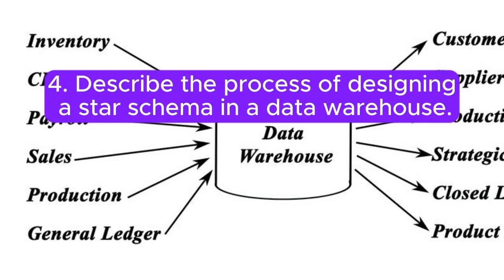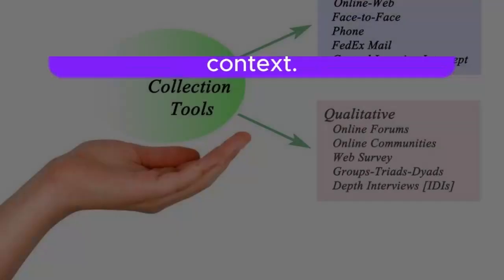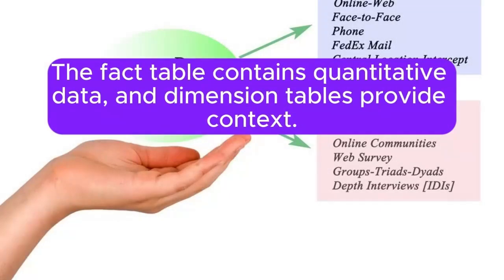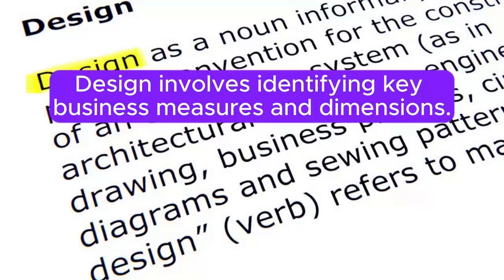Question 4: Describe the process of designing a star schema in a data warehouse. Answer: A star schema involves a central fact table surrounded by dimension tables. The fact table contains quantitative data, and dimension tables provide context. Design involves identifying key business measures and dimensions.